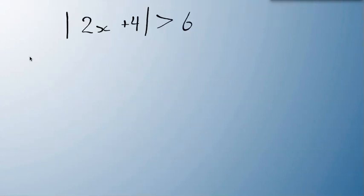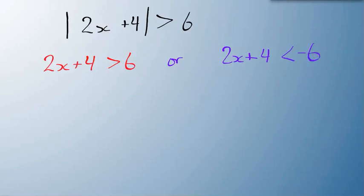Now this one is going to be a little different, because it's greater than. If I look at greater than, then I have to write this as 2x plus 4 is greater than 6, or I have to write 2x plus 4 is less than minus 6, the opposite sign, and I flipped the inequality sign.